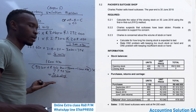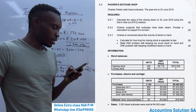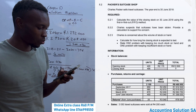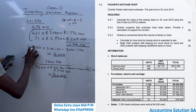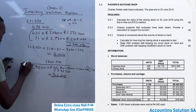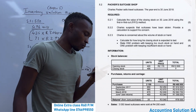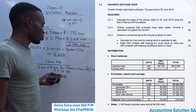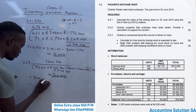Moving to the next question, 5.2.3: state one problem with keeping too much stock on hand, and one problem with keeping insufficient stock on hand — five marks. Starting with one problem of keeping too much stock on hand: number one, goods can expire. Another option: goods can become out of fashion.